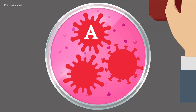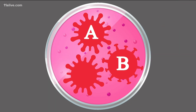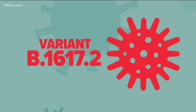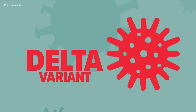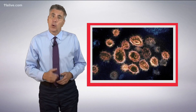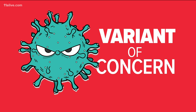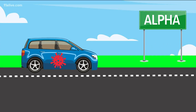Scientists know it as variant B.1.621, but the WHO knew that wouldn't mean a lot to us. So a group of experts decided to use the Greek alphabet to label certain coronavirus variants. Variant B.1.617.2 became Delta.